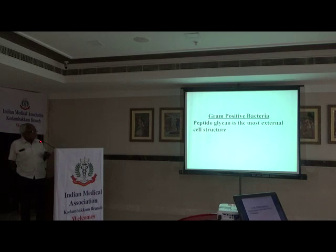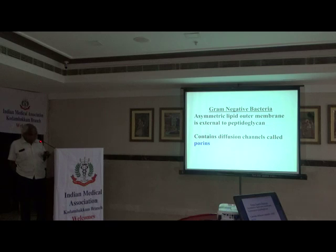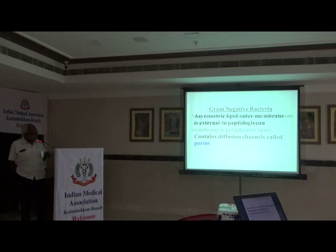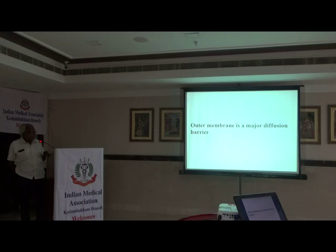In gram-positive bacteria, peptidoglycan is the most external structure. Whereas in gram-negative bacteria, an asymmetric outer membrane is external to the peptidoglycan. It is water-proof and controls diffusion. The outer membrane contains diffusion channels called porins. The space between the cytoplasmic membrane, peptidoglycan, and outer membrane is the periplasmic space.